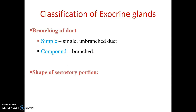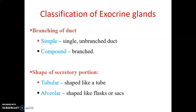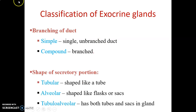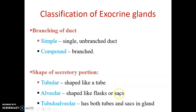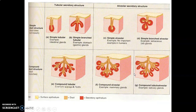How do you classify exocrine glands? You can classify based on the branching of the ducts or based on the shape of the secretory portion. A simple gland has only one unbranched duct; if it is compound, there is complex branching. For the secretory portion: if it is tube-shaped, that is a tubular gland; if it is round or flask-shaped like sacs, it is called alveolar or acinar; if you have both, it is a tubular-alveolar gland.